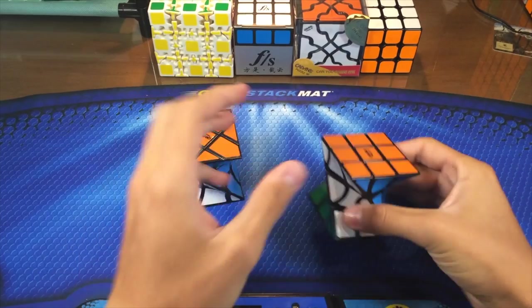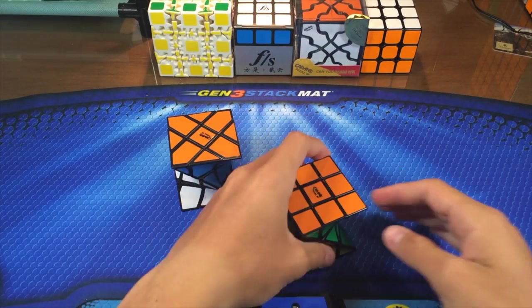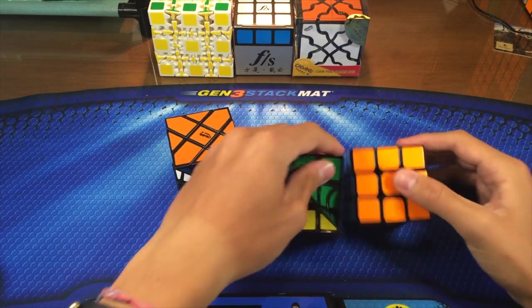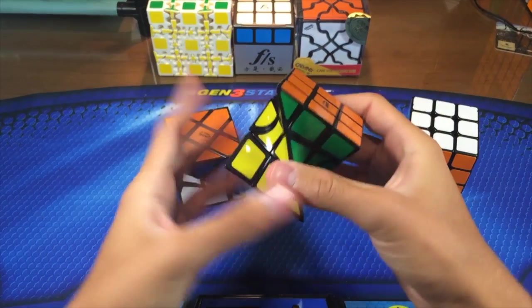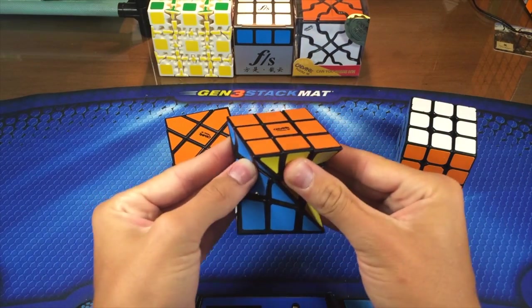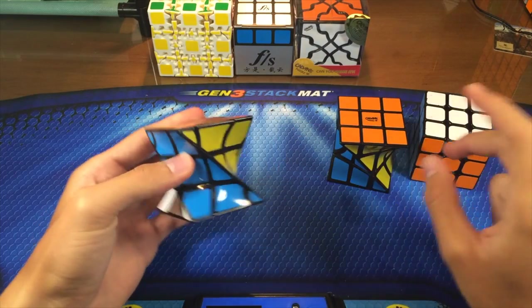Alright, so out of the box, these kind of feel really cool because they're twisted, and they actually feel a bit smaller, maybe because they're twisted. Let's go ahead and see a size comparison. Compared to a Hualong, it's the same size, but I think because it's twisted it feels a lot smaller. Same with the Fisher one. So let's go ahead and do first turns.